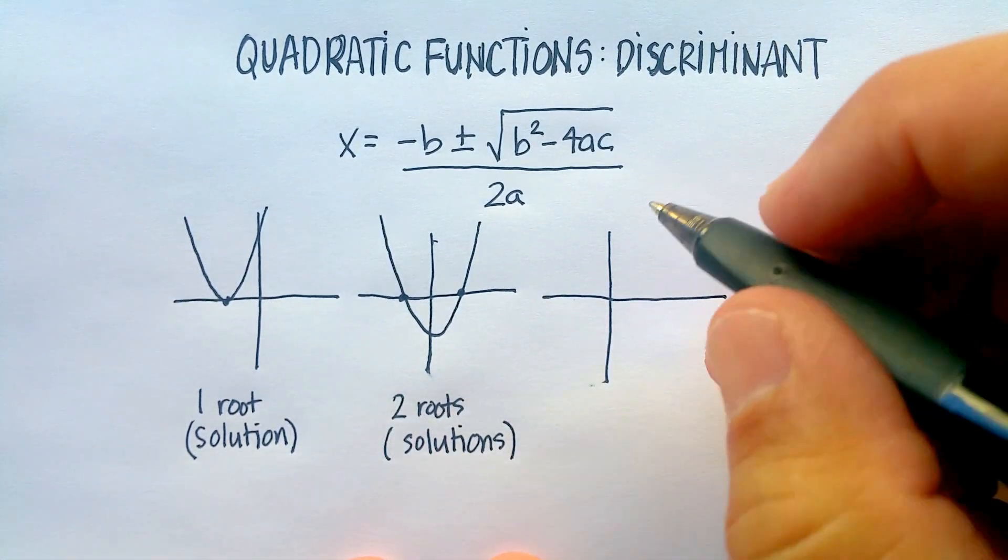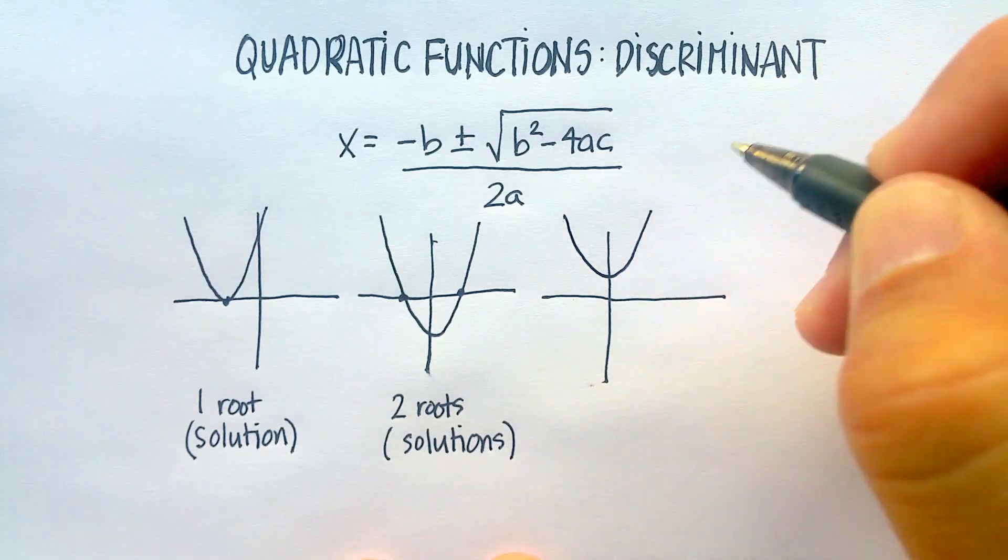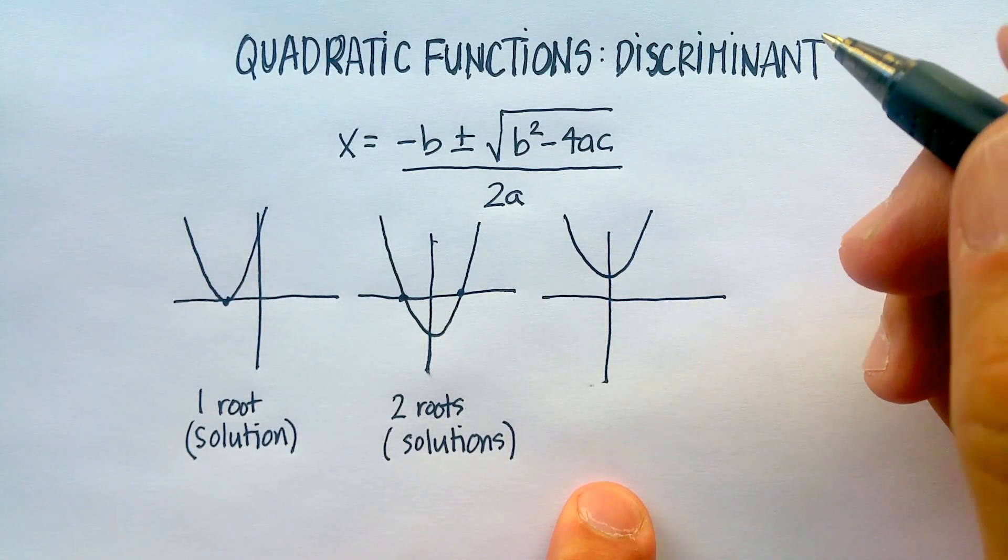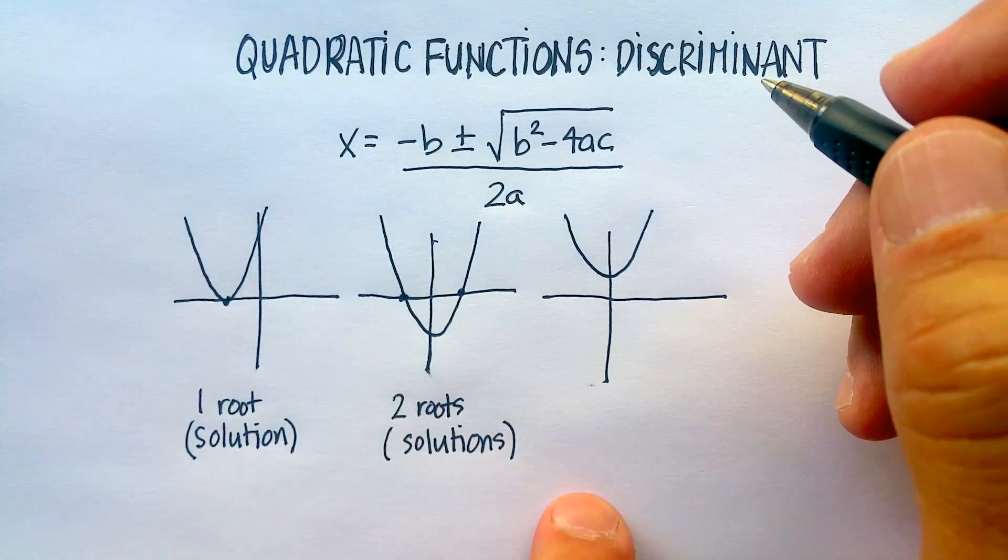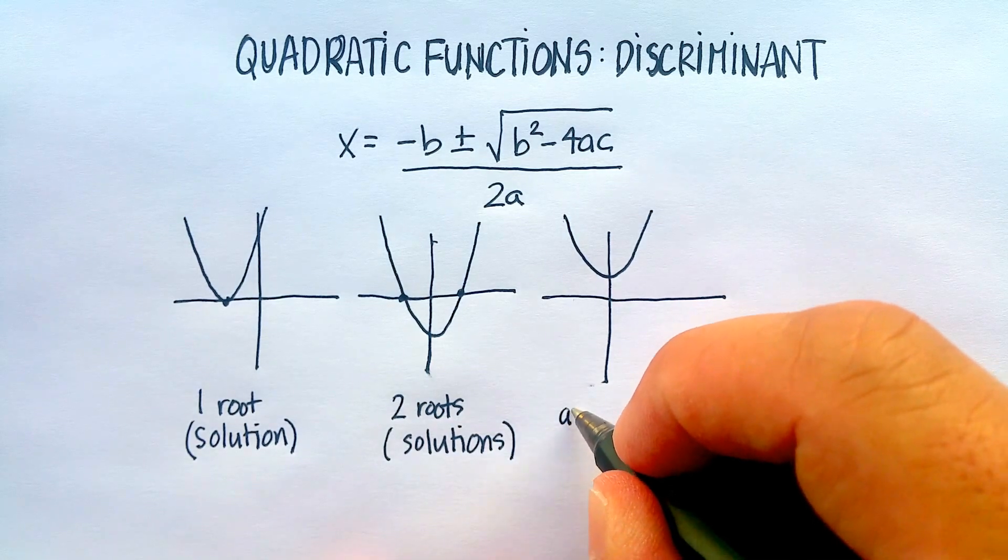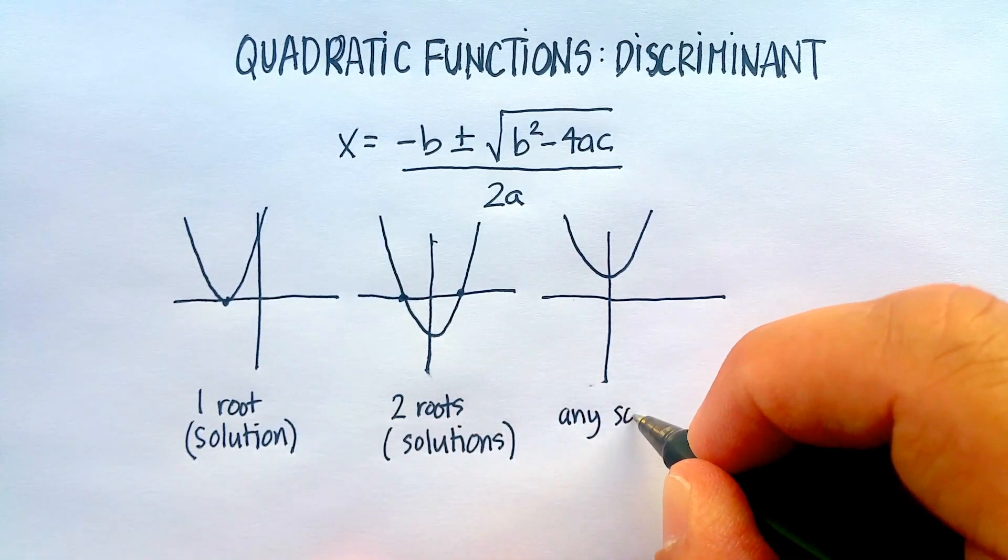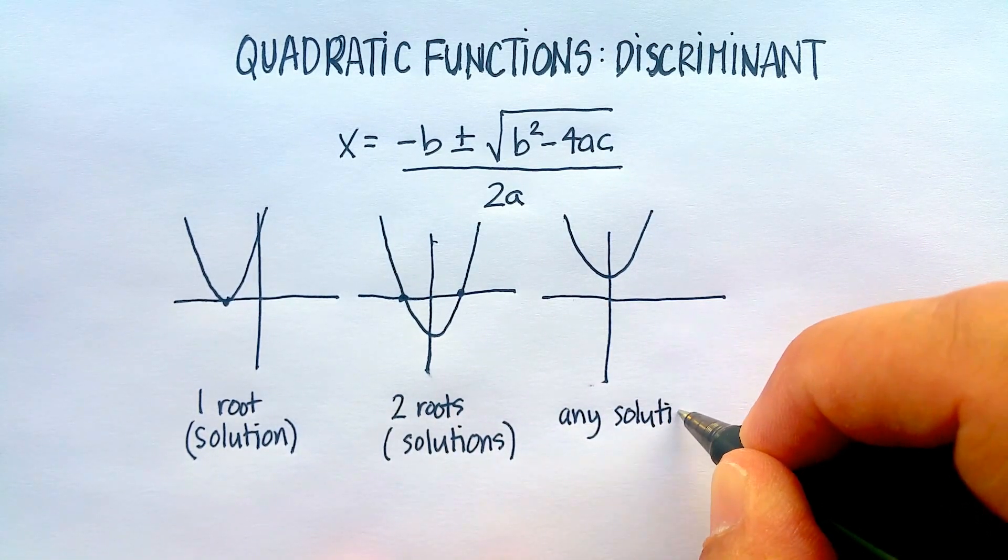And these are two solutions. Or the third possibility is this, where my parabola does not cross at all. Does that mean there are any solutions? Let me just put that in as a question mark.